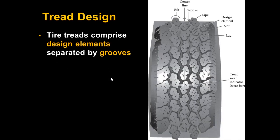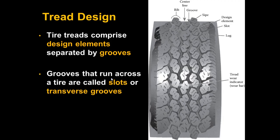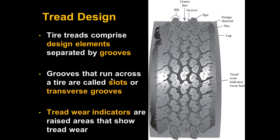When we say tread design, we're talking about the design features that make up the pattern of the tire. These design elements are separated by grooves in the rubber that run across the tire. These grooves have a few names, including slots or transverse grooves. You can also analyze a tire tread to look at tread wear indicators, which are raised bars of rubber that indicate how much a tread has worn down. These can be great points of comparison when trying to match tire tread marks.